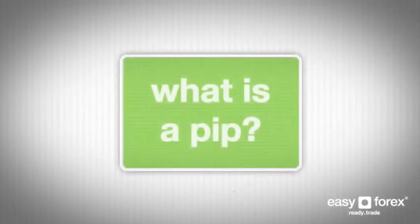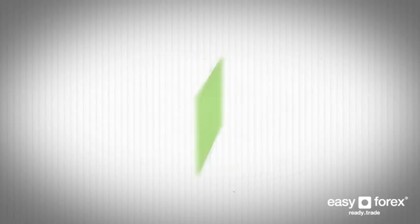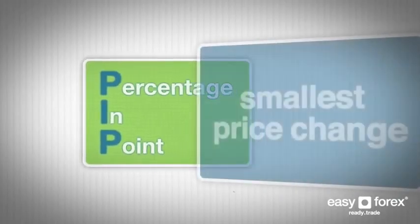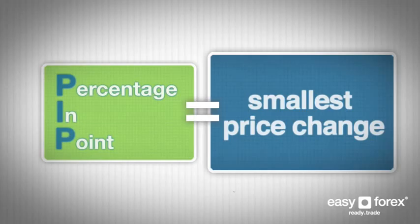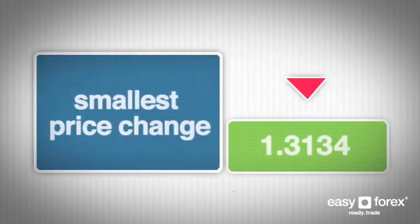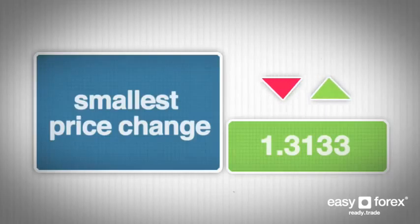What is a PIP? In order to trade successfully, you need to understand what a PIP is and how to calculate its value. A PIP stands for percentage in point and is the smallest price change that a given exchange rate can make. An increase or decrease in PIPs represents a profit or a loss in your Forex trade.